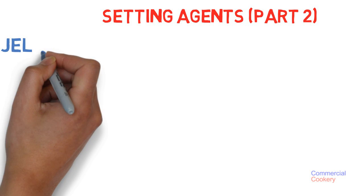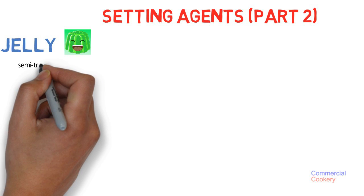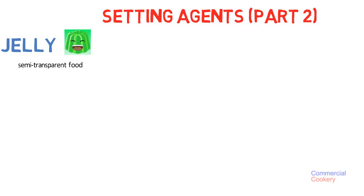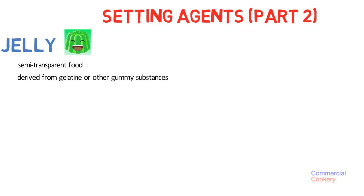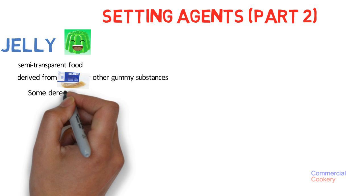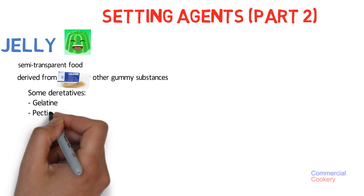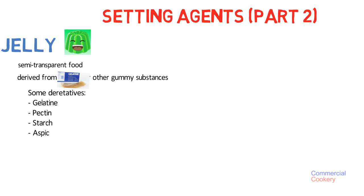First of all is the jelly. It's a semi-transparent food, primarily derived from gelatin or other gummy substances. The derivatives of jelly include things like gelatin, pectin, starch, and aspic.